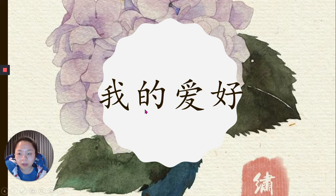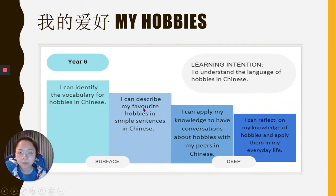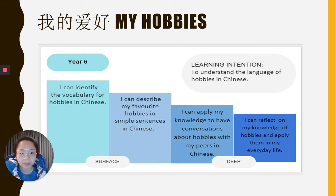We are going to review the sentences and vocabularies we learned in the past several weeks. Look at the learning intention and success criteria first. Learning intention: to understand the language of hobbies in Chinese. Success criteria: I can identify the vocabulary for hobbies in Chinese. I can describe my favorite hobbies in simple sentences in Chinese. I can apply my knowledge to have a conversation about hobbies with my peers in Chinese. I can reflect on my knowledge of hobbies and apply them in my everyday life.